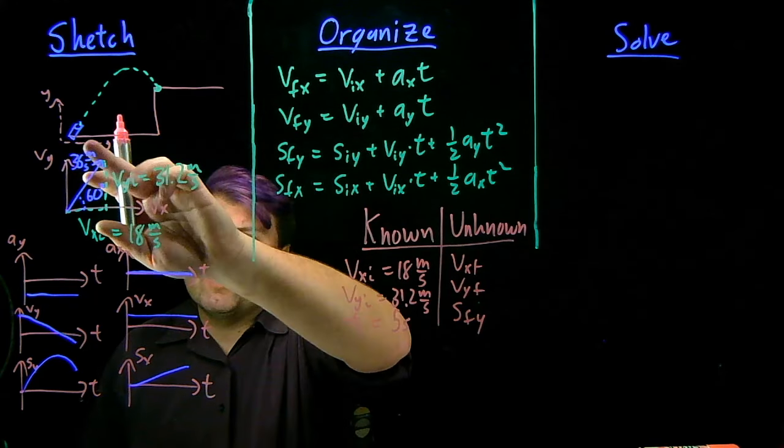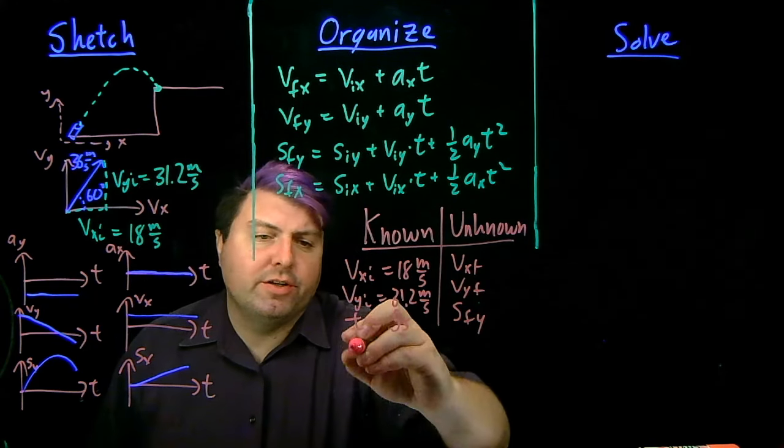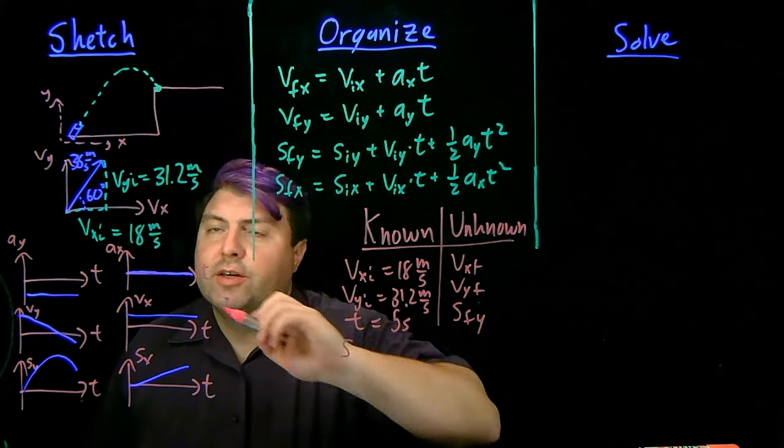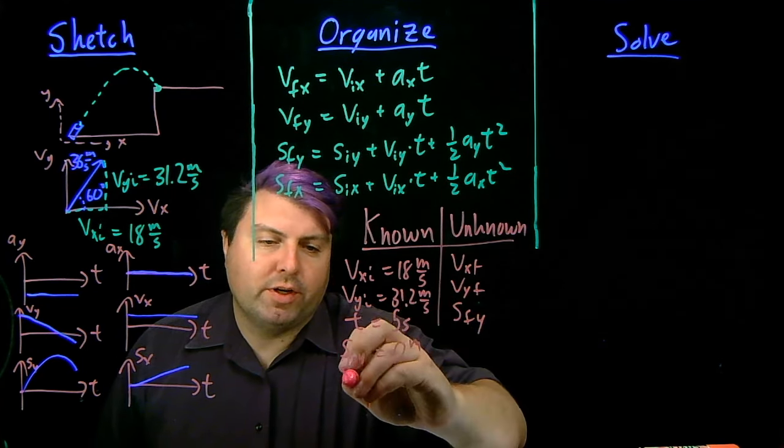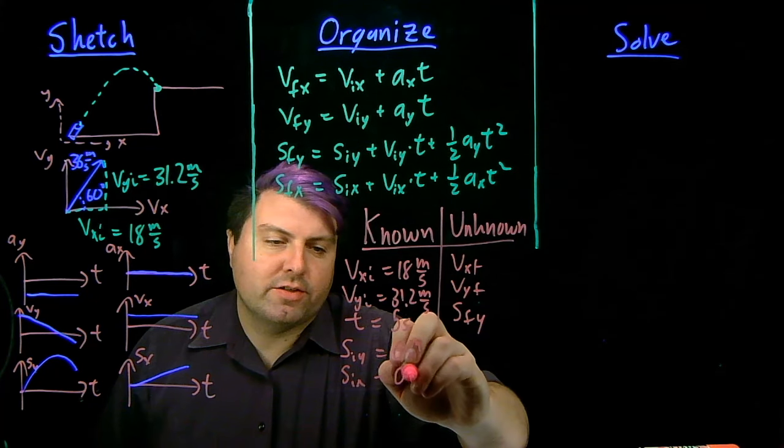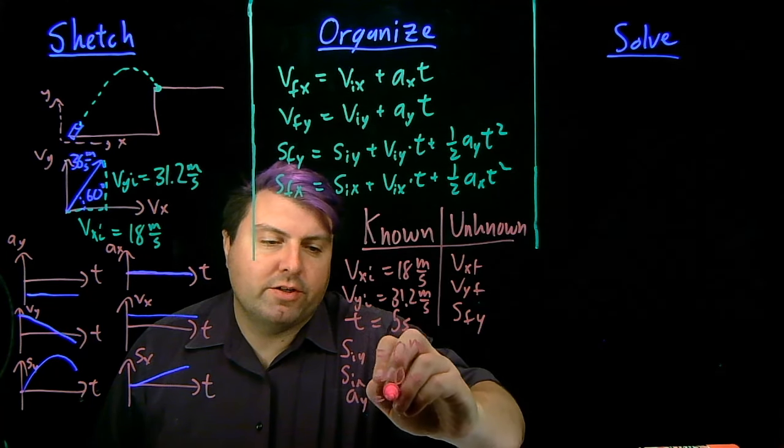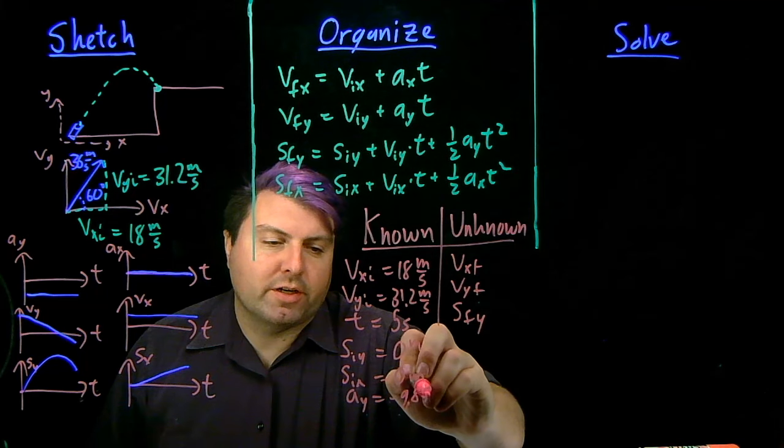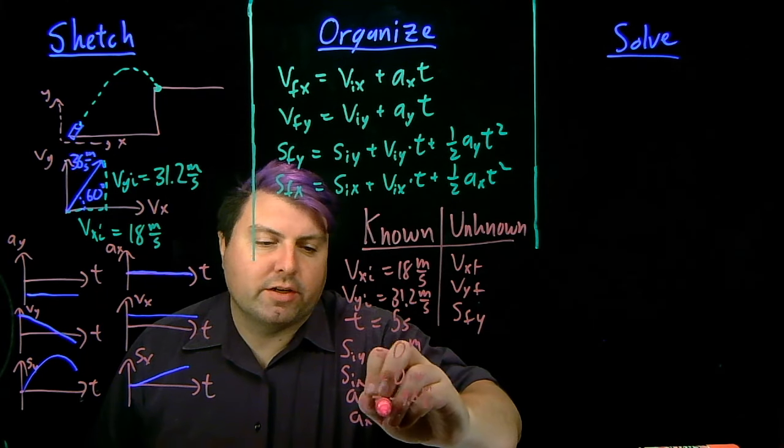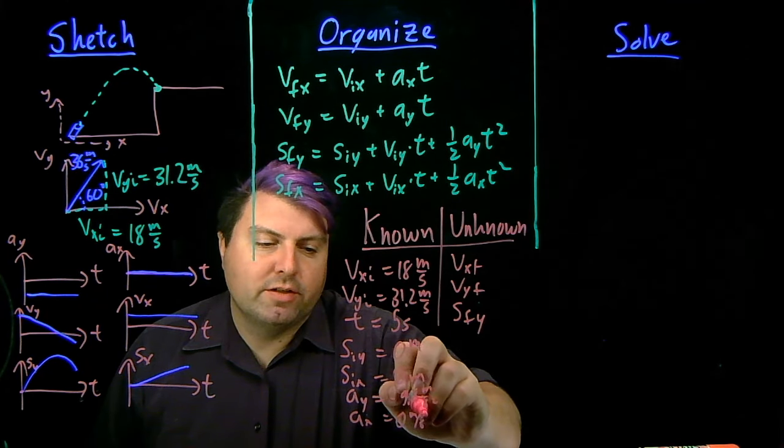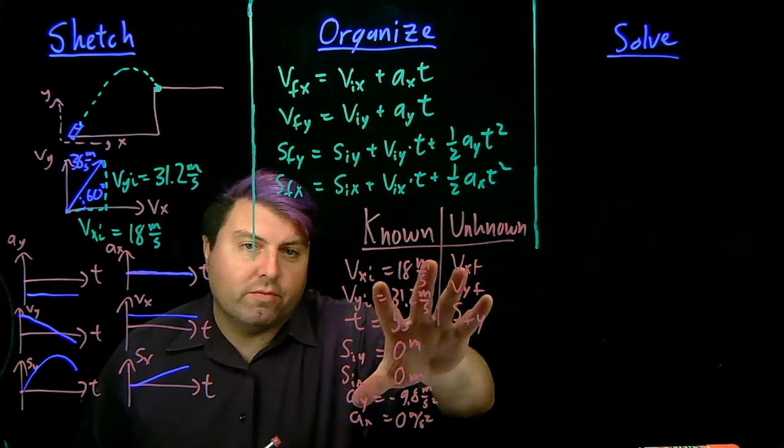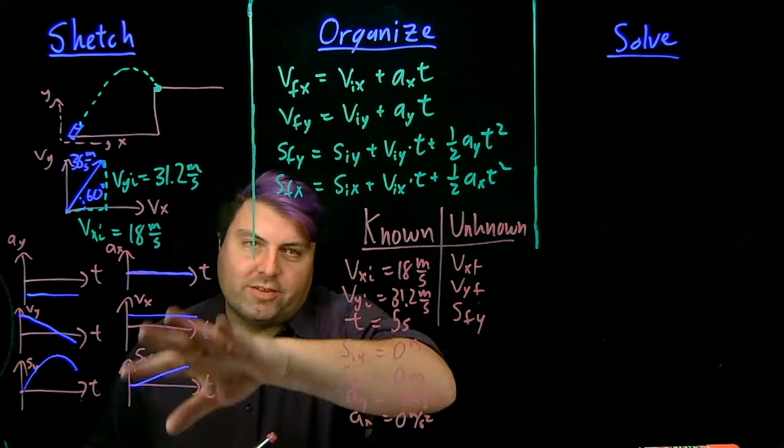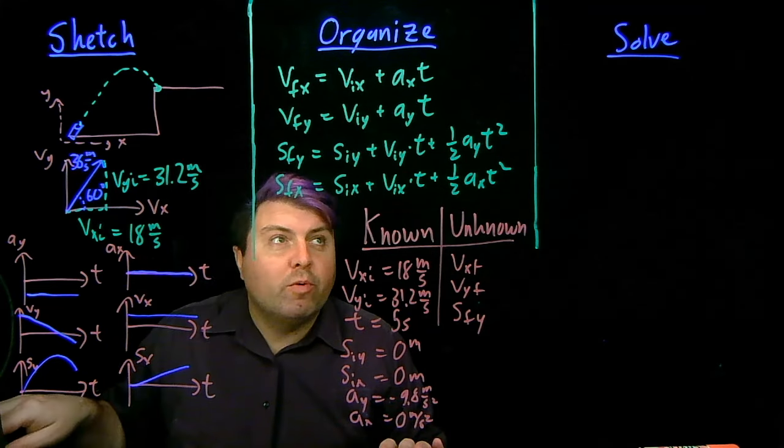We also know a few other things, right? If we say this point is our origin, then we know the position initial in the y is zero meters. We know that the position on the x is also zero meters. The acceleration of the y is negative 9.8 meters per second squared. And the acceleration in the x is, as we might imagine, zero meters per second squared. So, right, very nice to have it in this table, but also nice to have it in these graphs. With that, in our solve step...